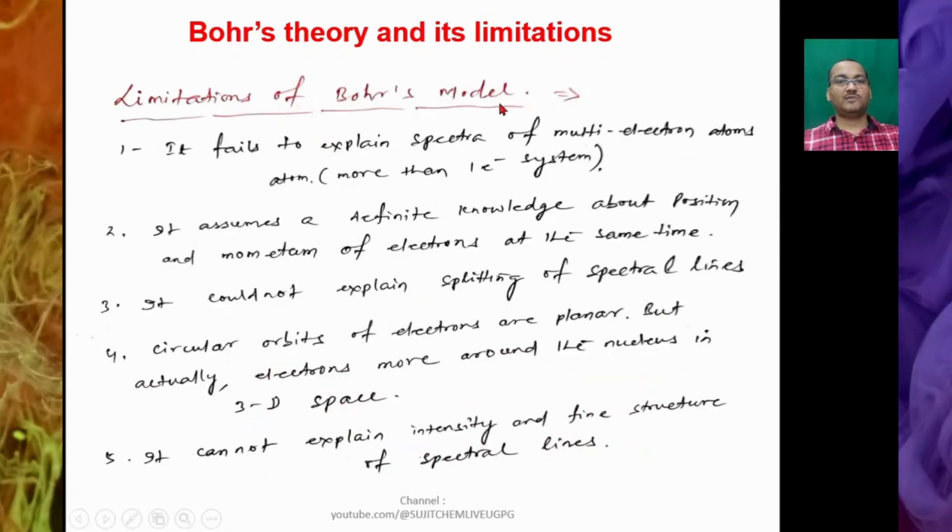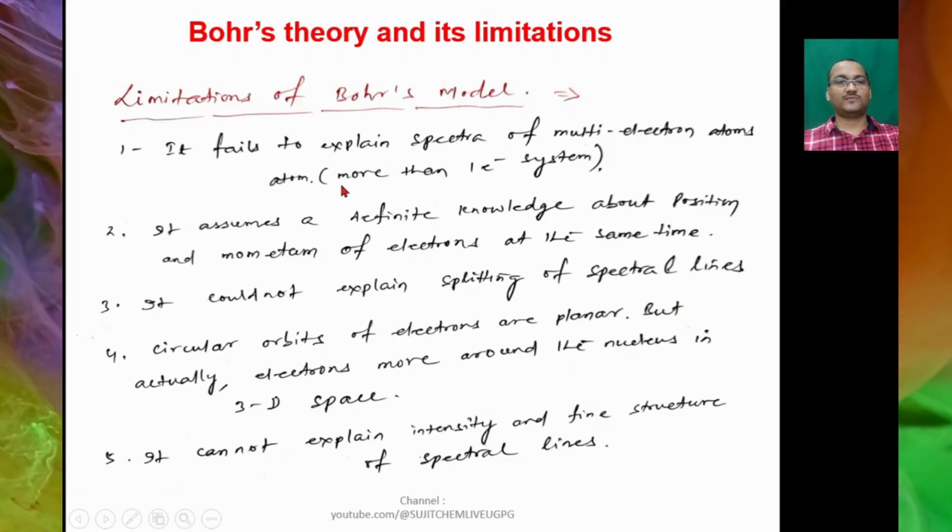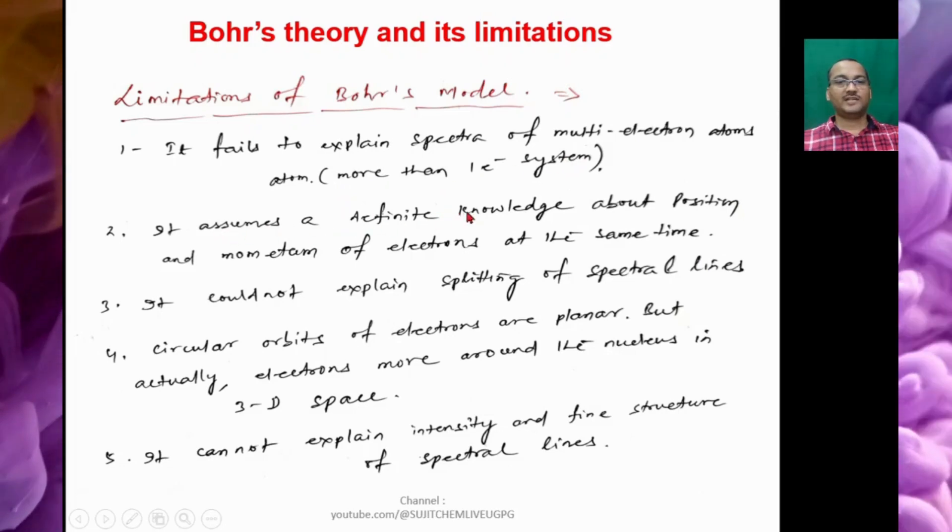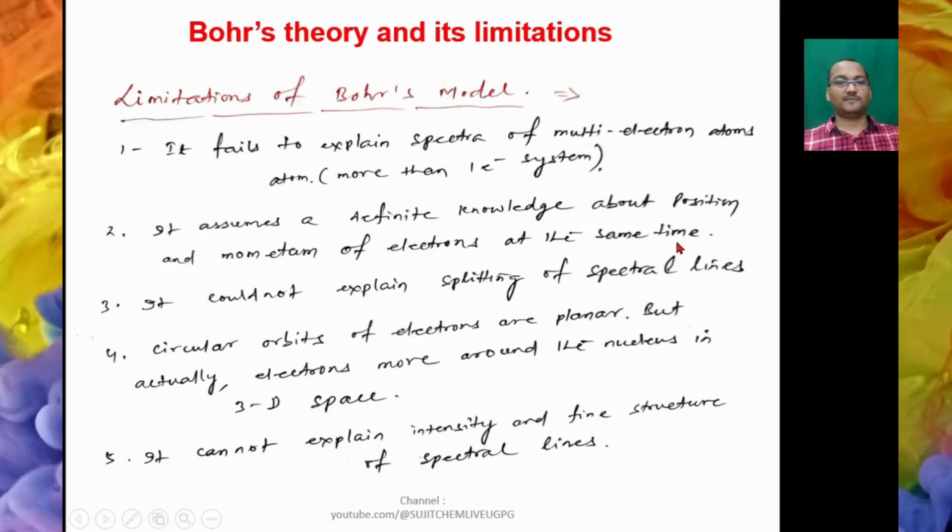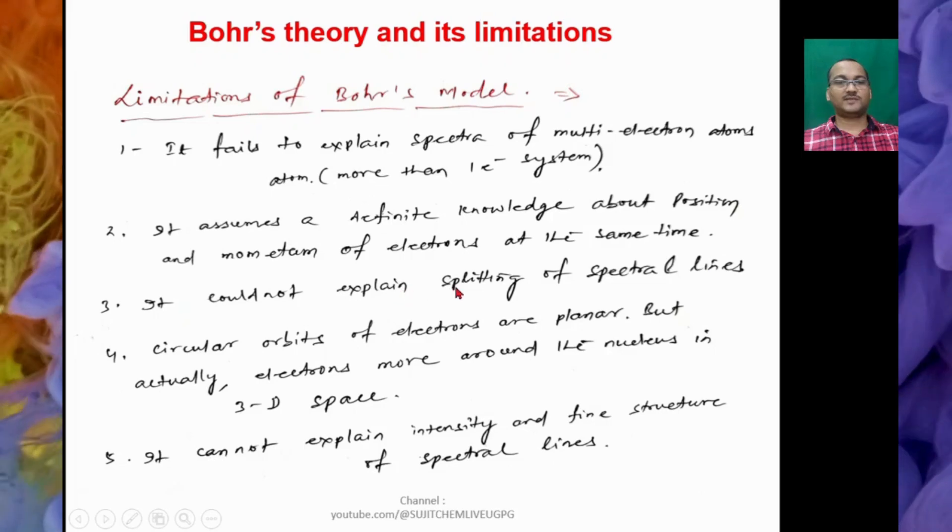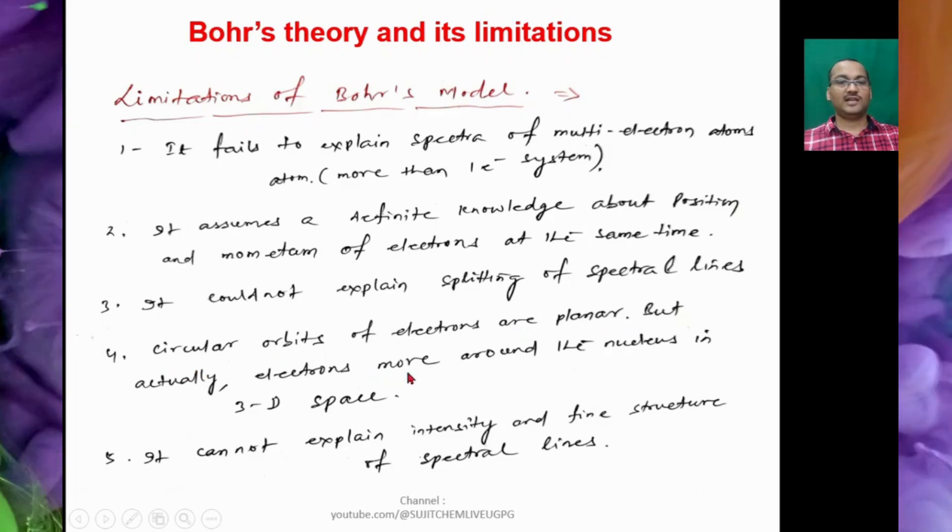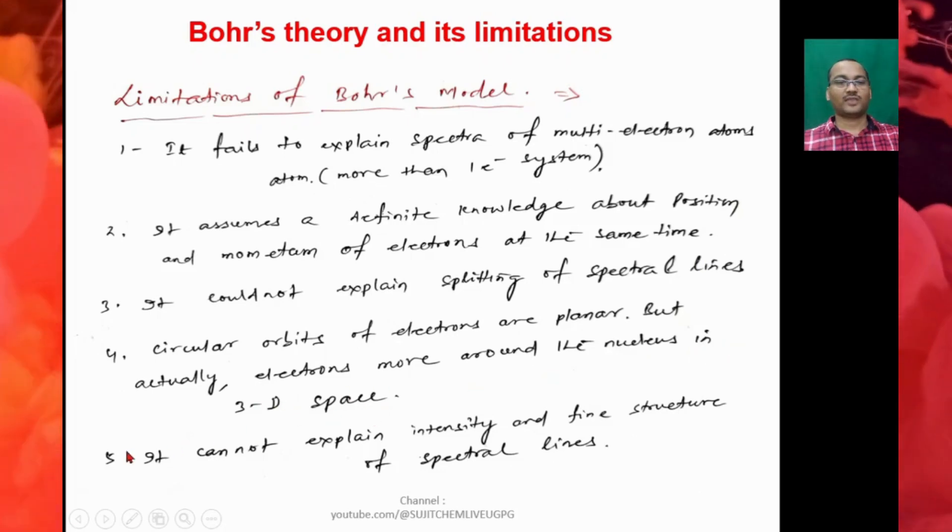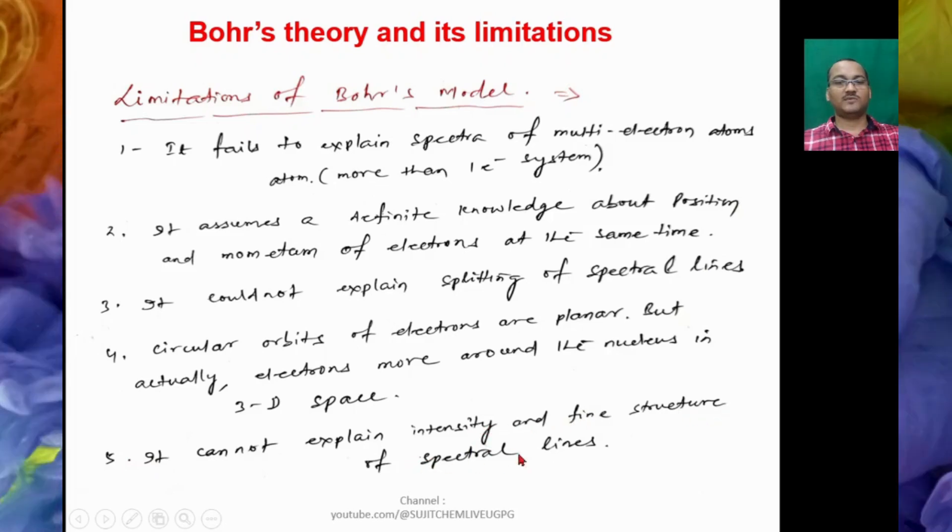The next is limitations of Bohr's model. It fails to explain the spectra of multi-electron atoms, so that means more than one electron systems. It assumes definite knowledge about position and momentum of electron at the same time. It could not explain the splitting of spectral lines and circular orbits of electrons are planar, but actually electrons move around the nucleus in three-dimensional space. Bohr's theory could not explain the intensity and fine structure of spectral lines.